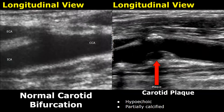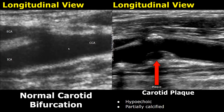Here is a longitudinal view showing the common carotid artery and its branches — the external carotid artery and the internal carotid artery. This is the carotid bifurcation, and over here we have a carotid plaque. It can appear as a hypoechoic structure within the lumen, and may be partially calcified with those calcified areas appearing hyperechoic.